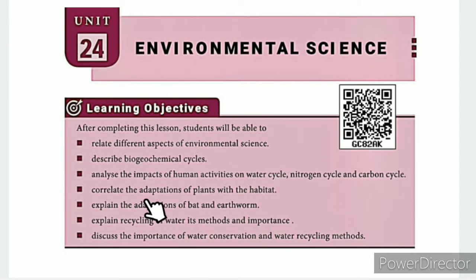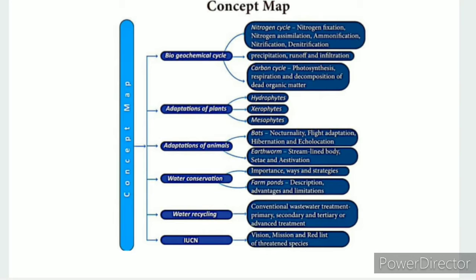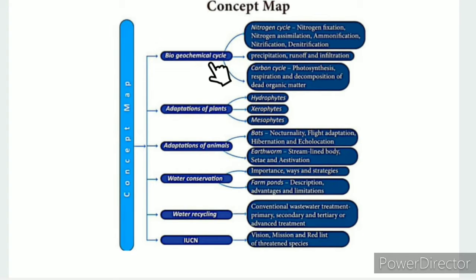The topic focuses on adaptation of plants with the habitat. In the QR code ICT corner link and description box, you will find a concept map covering the bio-geochemical cycle Part 1: water cycle, carbon cycle, and nitrogen cycle.